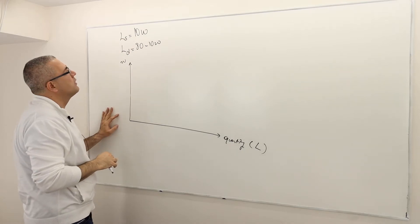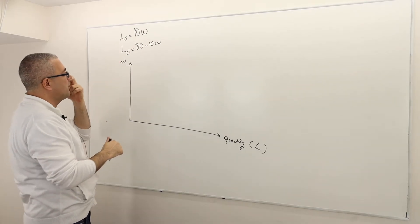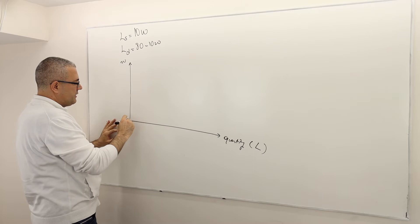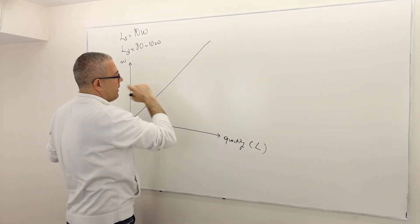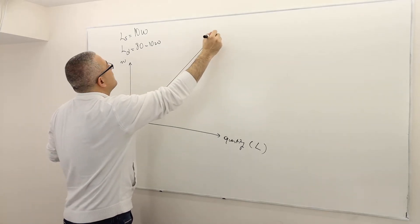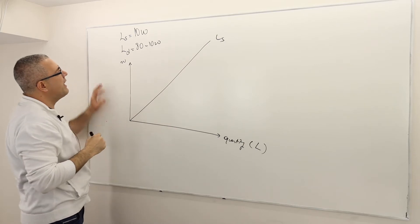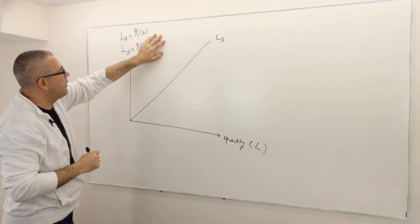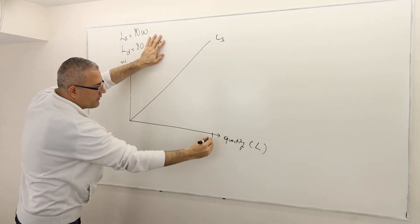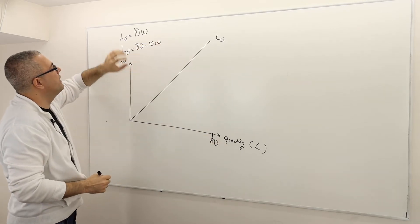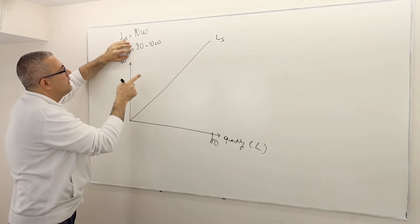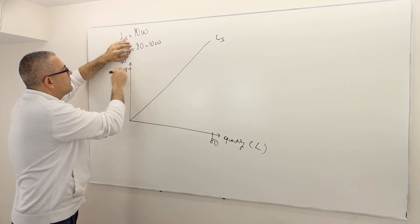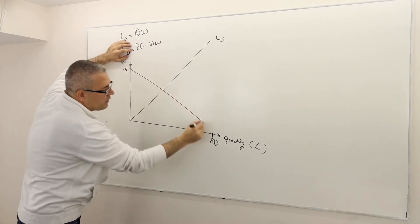What does the supply curve look like? So when W is 0, supply is 0. So it's a straight line. Something like this. This is L supply. And the demand curve is when W is 0, L is going to be 80. So let's say this is 80 units. And when L, the quantity is 0, W is going to be $8.